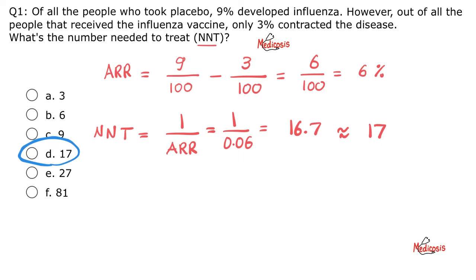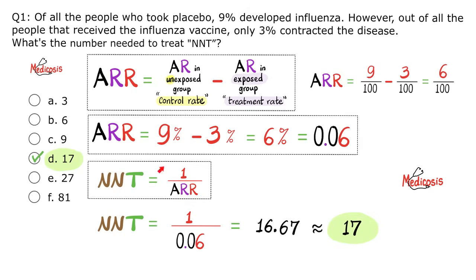If your exam does not allow a calculator, flip the fraction: instead of 6 over 100, it becomes 100 divided by 6, which is 50 divided by 3, approximately 17. Pause and review the same answer shown in more color. The number needed to treat means that out of every 17 persons who take the influenza vaccine, only one is going to benefit — meaning they will not contract the influenza virus.